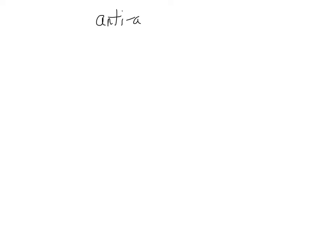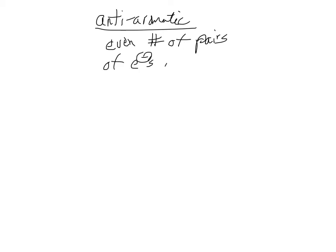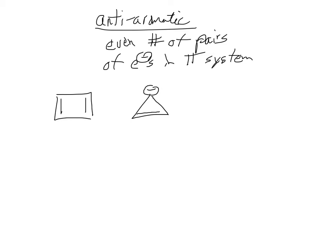Now let's look at some anti-aromatic compounds. The rules are similar: you still need an uninterrupted pi system in a ring. But the second rule changes — now we want an even number of pairs of electrons in the pi system for anti-aromaticity.